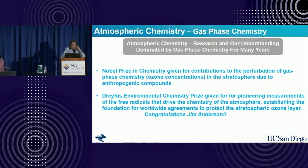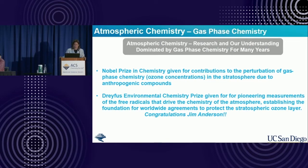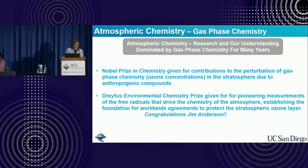When we think about atmospheric chemistry and some of the big awards, a lot of it is gas phase chemistry. When I was an undergraduate student and talked about sulfur chemistry, it was all gas phase. The Nobel Prize was given for contributions to the perturbation of gas phase chemistry and ozone concentrations in the stratosphere. Jim, your pioneering measurements of free radicals that drive the chemistry of the atmosphere established the foundation for worldwide agreements to protect the stratospheric ozone layer. Excellent, brilliant work—congratulations.